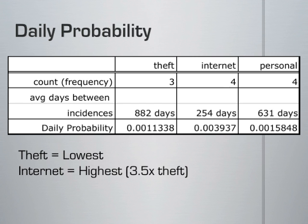I tallied the number of incidences in each category. For each category, I found the average number of days between each event. To find the daily probability, I divided 1 by the average number of days between incidences. The daily probabilities, however, can be tricky to interpret. For the risk of theft, the daily probability is 0.0011, or about one in 1,000.